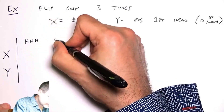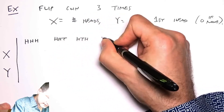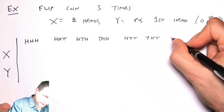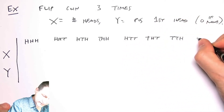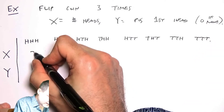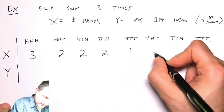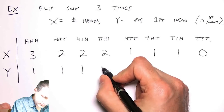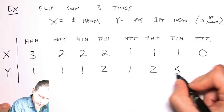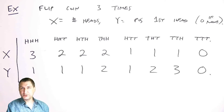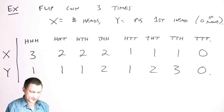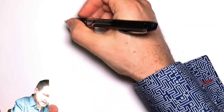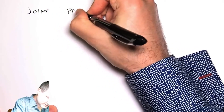The outcomes are: HHH, HTH, THH, HHT, THT, TTH, HTT, TTT. The number of heads X takes values 3, 2, 2, 2, 1, 1, 1, 0, and the position of the first head Y takes values 1, 1, 2, 1, 2, 3, 1 — and zero if no heads. Now I can build the joint PMF from this.